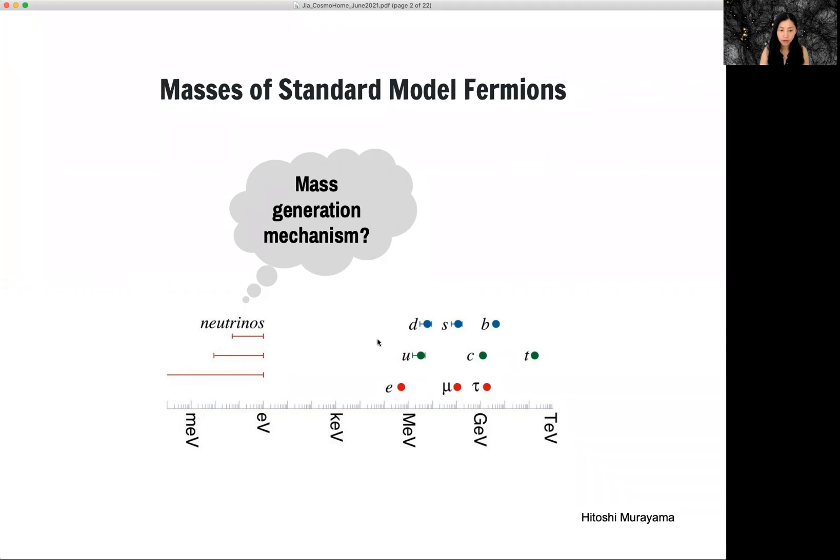You can see all other fermions are clustered in this region from EV to MEV, but neutrinos are clustered around sub-EV range.